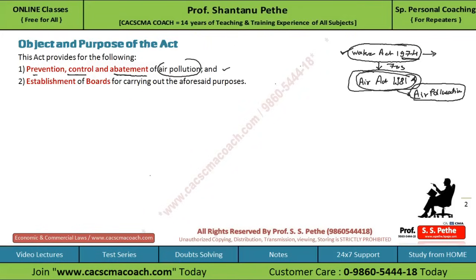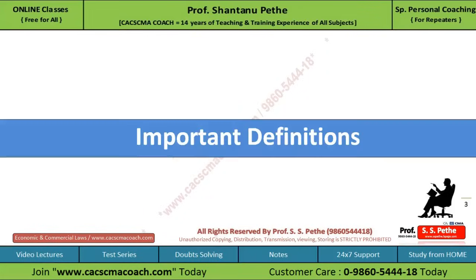Another objective is the establishment of a board for carrying out the aforesaid purposes. After enacting the act, it is necessary to have an agency to implement it, so power is given to the government to establish a board for implementing this act. Now we will also see the definitions under this act, which are important — there are very high chances that questions on definitions will appear in exams.